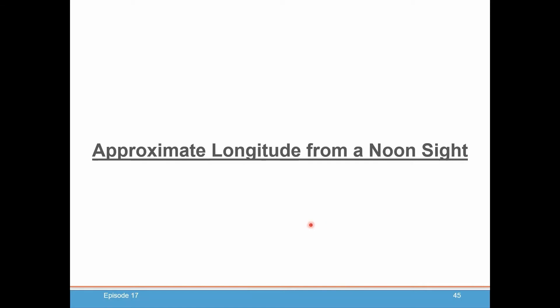Next episode we'll talk about getting an approximate longitude from a noon sight. So we just calculated a latitude from noon sight, which is pretty exact if you follow all those rules. But determining longitude is a little more difficult, and that's why we always consider that an approximate longitude that you can get from a noon sight. And we'll cover that in our next episode. Thank you very much.